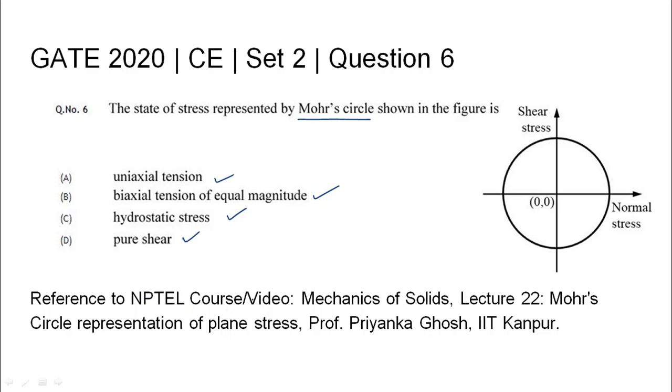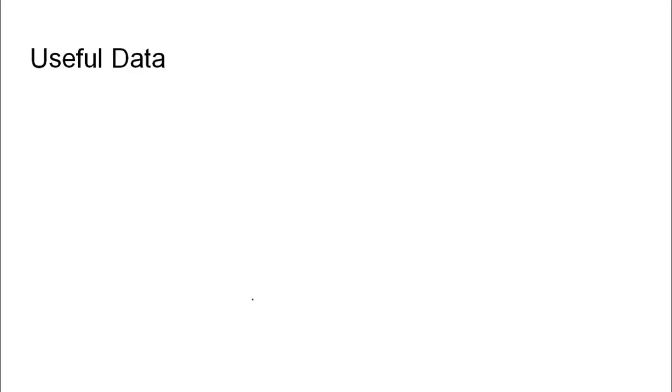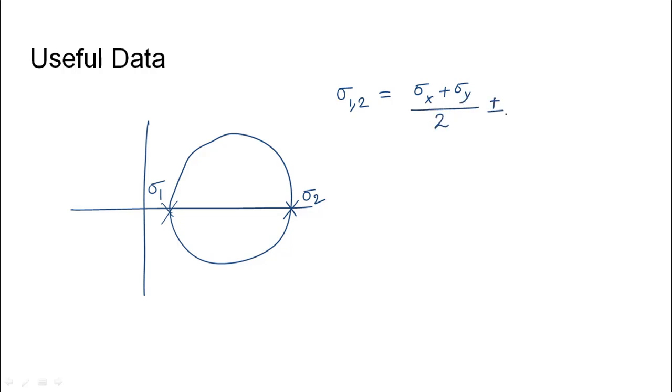Coming to the useful data, if we are given a Mohr's circle, it will have two stress values: Sigma 1 and Sigma 2. These are called the principal stresses. Sigma 1,2 is given as the sum of the axial stress along the x-axis plus normal stress along the y-axis by 2, plus minus the difference of the axial stresses plus the square of the shear stress.